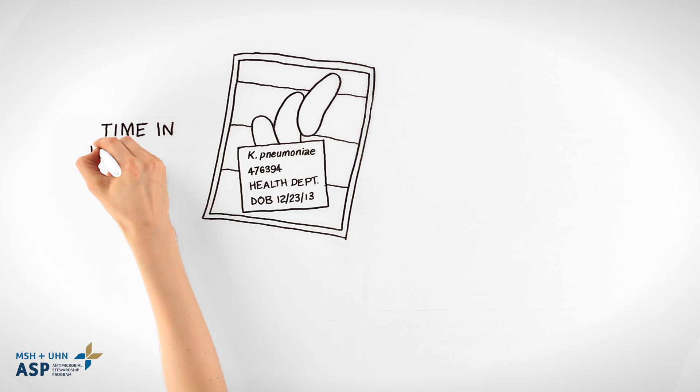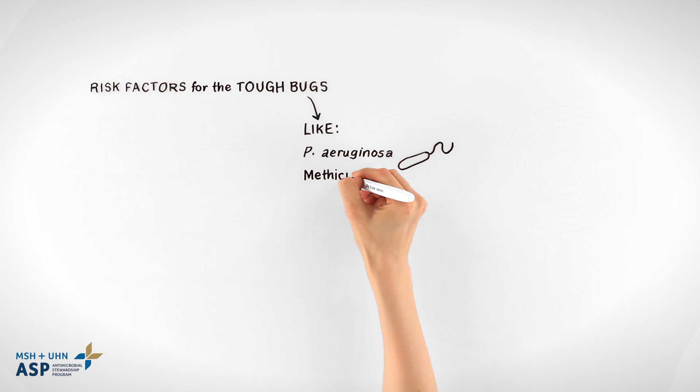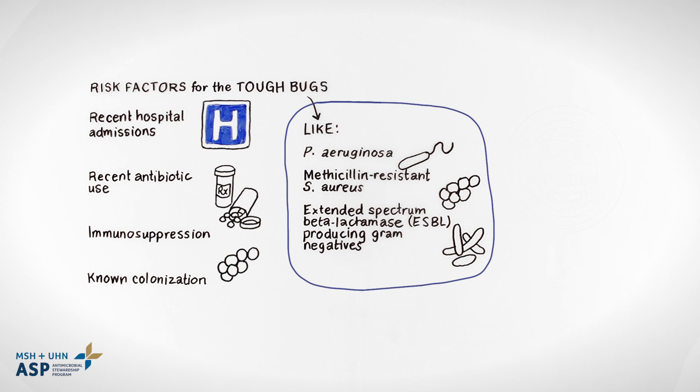To identify target bugs, guidelines place emphasis on the duration of time in hospital prior to the onset of infection. The longer the time in hospital, the greater the likelihood of colonization. There are risk factors for infection with more difficult-to-treat organisms such as Pseudomonas, MRSA, and ESBLs. These risk factors include recent hospital admissions, antibiotic use, immunosuppression, and known colonization with any of these organisms.